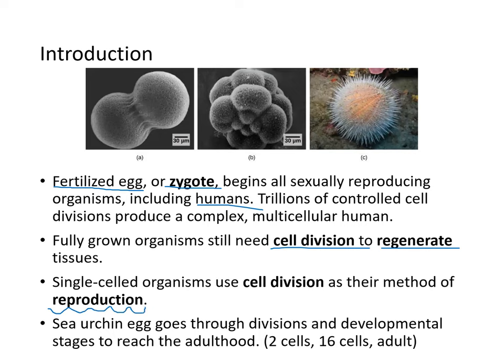Sea urchin eggs go through divisions and developmental stages to reach adulthood. This is a sea urchin — it's the source of uni in sushi; the uni is the gonad of the sea urchin. Here is a sea urchin dividing and developing into a gastrula.